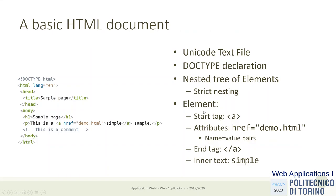The structure of an HTML document is very simple — it's just a text file in Unicode. The first line is mandatory: the doctype declaration, written as <!DOCTYPE html>. Every HTML5 file starts with this declaration. Compared to the HTML 4 declaration, which had three complex variants with many attributes, this is much simpler. After the initial document type declaration, everything is a set of nested text: the structure of this text file is basically a nested tree of elements.